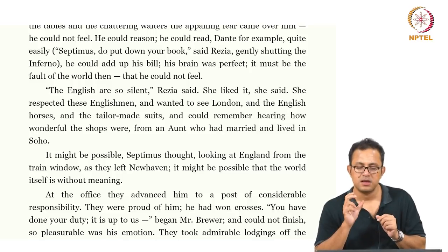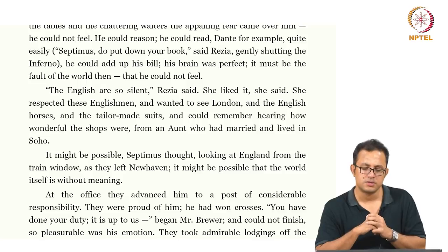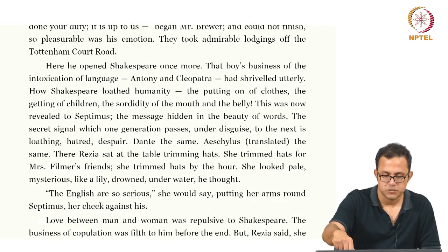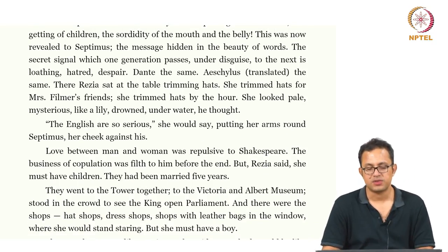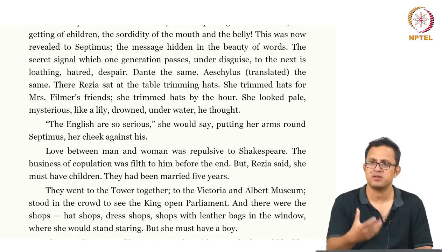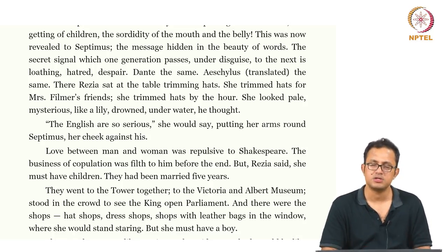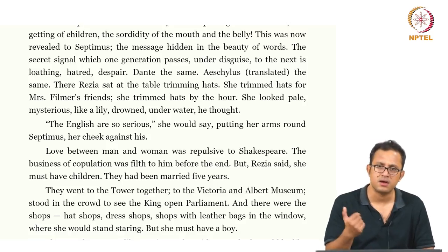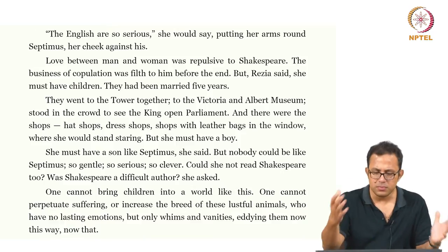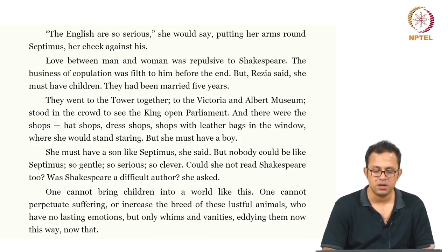Septimus may be compared to those classical figures who come back from hell and cannot reintegrate into living society. Razia's initial admiration of English seriousness gradually reveals itself as a lack of feeling masquerading as seriousness, which alienates her completely. She becomes a cultural, linguistic, and political outsider — an Italian woman after the First World War stationed in London, technically from the enemy state, married to this Englishman, completely cut off from everything.